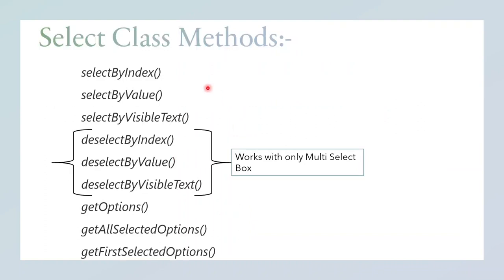There are different methods of the Select class and we will be covering all of them: select by index, select by value, select by visible text, deselect by index, deselect by value, deselect by visible text, get options, get all selected options, and get first selected option. The deselect by value, deselect by index, and deselect by visible text only work for the multi-select box, which we will cover as well.